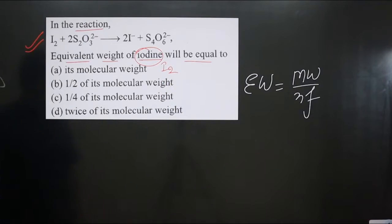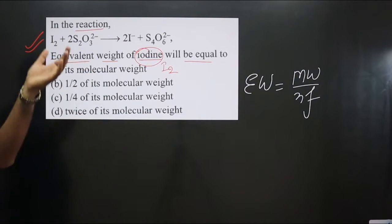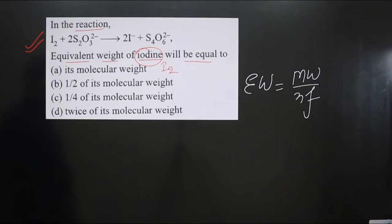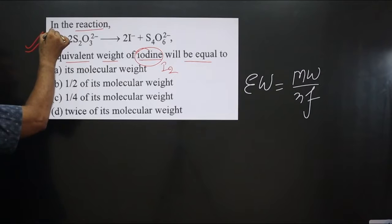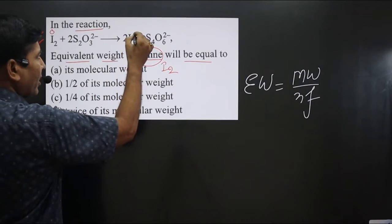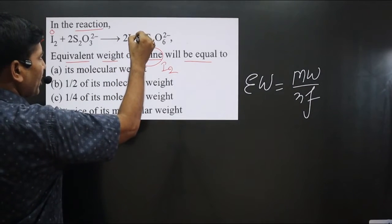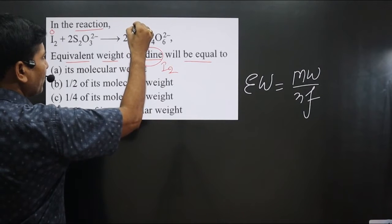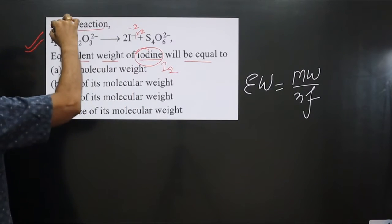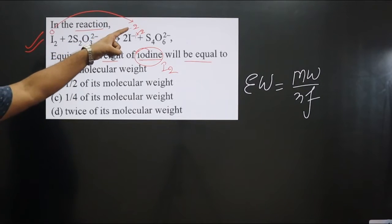The equation is already given, and we can calculate the electron transfer to find the n-factor. I₂ is a neutral molecule with an oxidation number of zero. On the other side, iodine (I⁻) has an oxidation number of minus one, so two iodine atoms carry a total charge of minus two. We find the difference in oxidation number — there is a decrease, which means this is a reduction reaction.